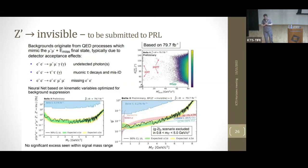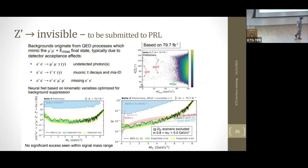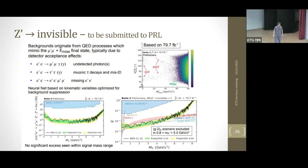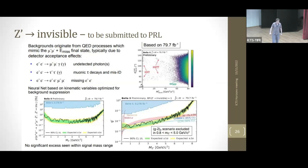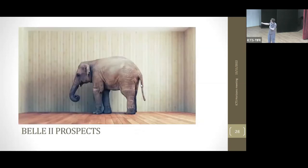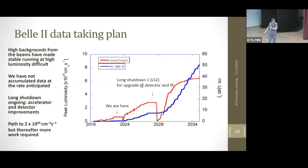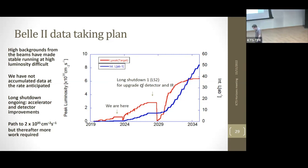Question: Are there plans to run at energies other than the Υ(4S)? Answer: At present, no — we want to accumulate as much data as possible at the Υ(4S). There are some plans for potentially doing scans for quarkonium in that region, but there is no plan to take significant time away from the 4S program for now. Once we're in the high-luminosity regime we would certainly consider it, but given the anomalies and current physics goals, the 4S remains the focus.